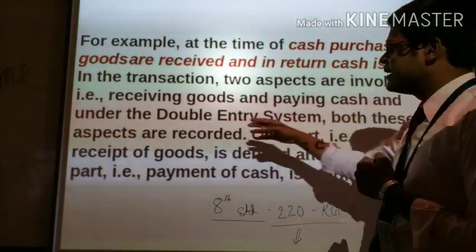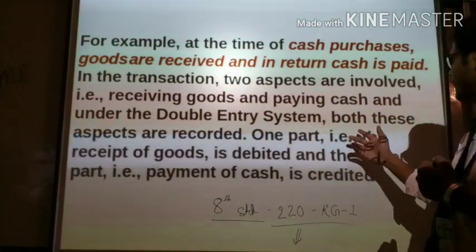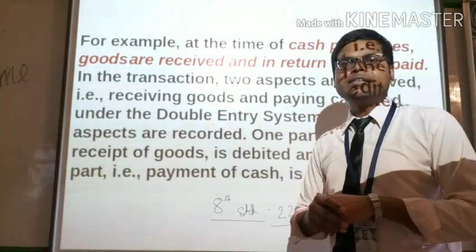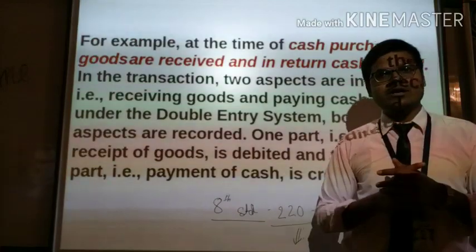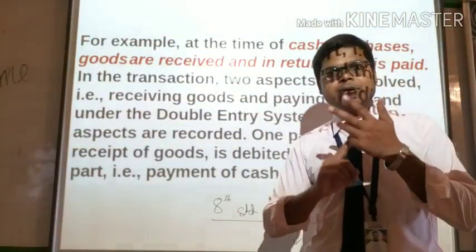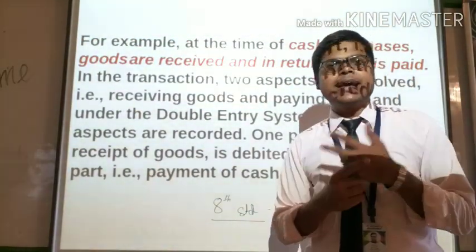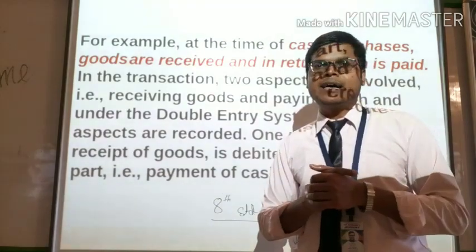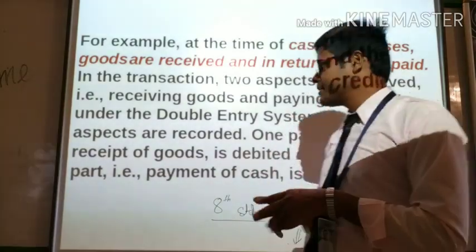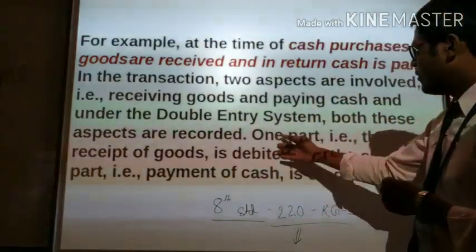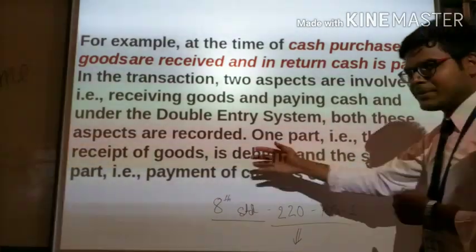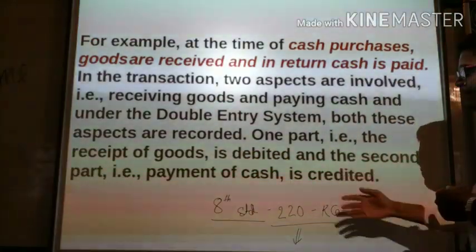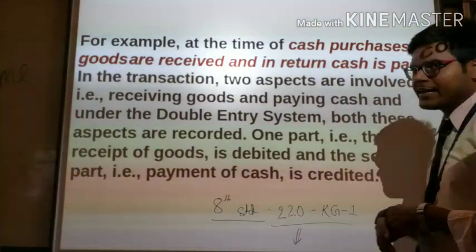Under the double entry system, both these aspects are recorded. One part — that is the receipt of goods — is debited, and the second part — that is the payment of cash — is credited.